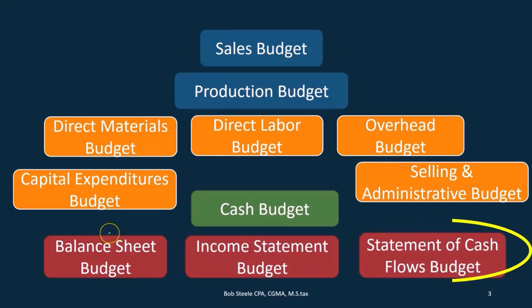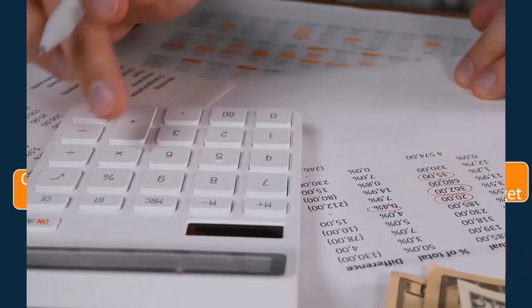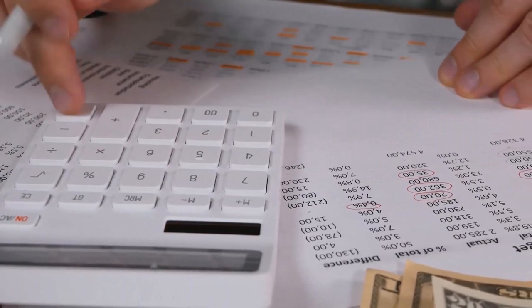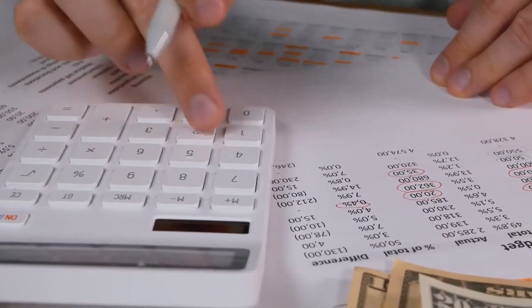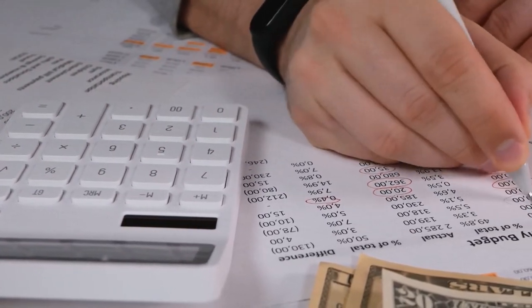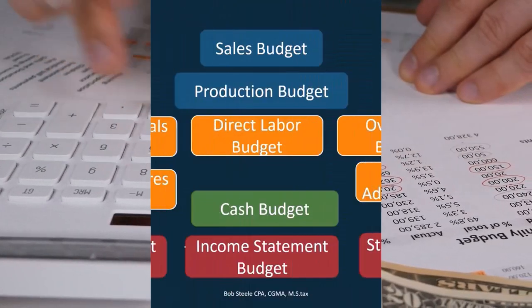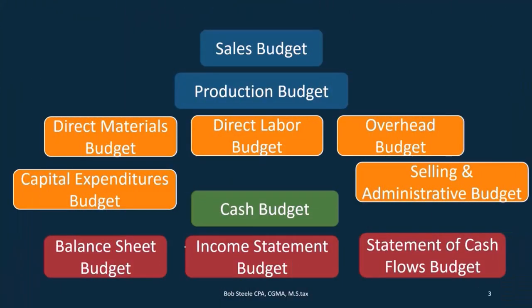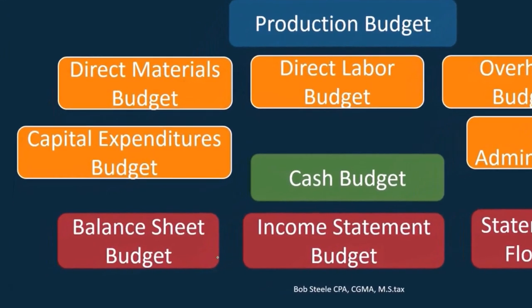We also had some other worksheets to calculate the income statement. We needed to calculate the cost of goods sold, and in order to do that we needed to have the cost of goods manufactured. That's the process we're going through. In this part, we're going to focus in on the balance sheet, putting a lot of the components together.